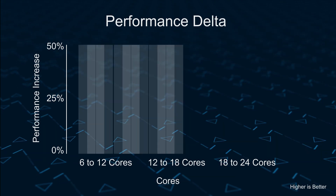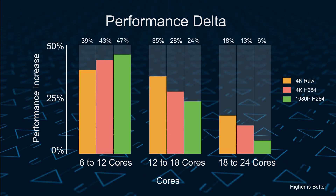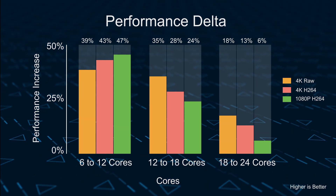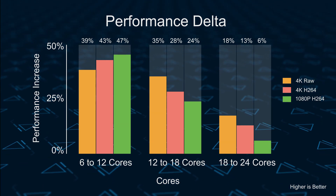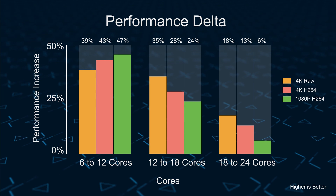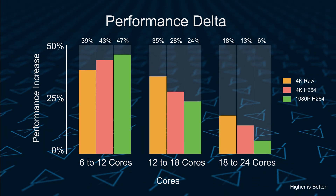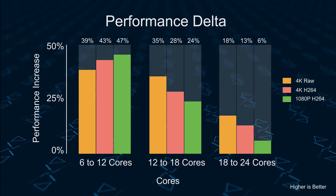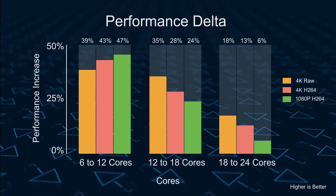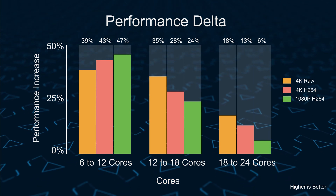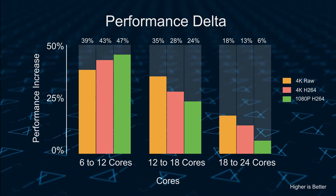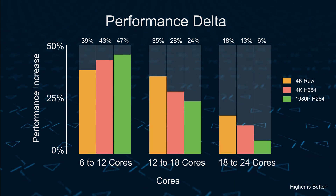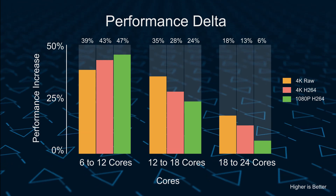Next, looking at the performance delta in percentage going from 6 to 12, 12 to 18, and 18 to 24 cores: the graph shows percent time decrease per jump. From 6 to 12 cores, Canon Cinema Raw Light saw a 39% decrease, H264 4K a 43% decrease, and 1080p a 47% decrease. Moving from 12 to 18 cores, the Raw 4K remained similar at 35%, but H264 4K and 1080p dropped to 28% and 24% respectively. Going from 18 to 24 cores saw even less: 13% and 6% performance gains.